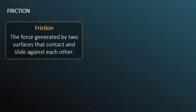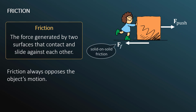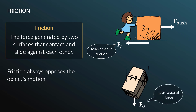Friction is the force generated by two surfaces that contact and slide against each other. Friction always opposes the object's motion. For example, a girl pushing a box to the right experiences a frictional force to the left. This is solid-on-solid friction. For a falling object, the upward frictional force is air resistance — fluid friction on the solid object.